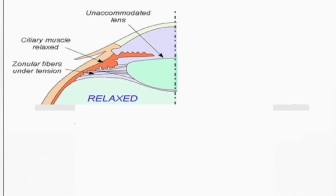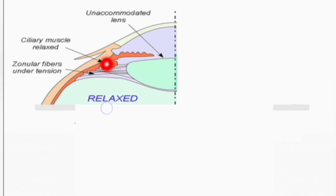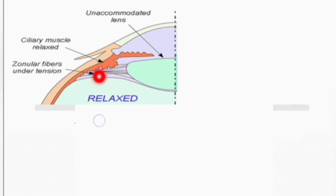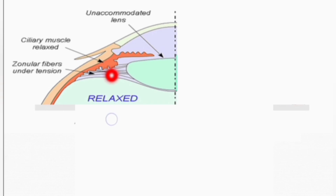Another view shows the structures which play a role in the process of accommodation. This is a non-accommodated lens, and this is the ciliary muscle — ciliary body and ciliary muscle. The ciliary muscle is relaxed when there is no accommodation and we are seeing distant objects. The important thing to remember is that when the ciliary muscle is relaxed, the suspensory ligaments — also called zonular fibers — which are attached to the ciliary muscle are taut, under tension.